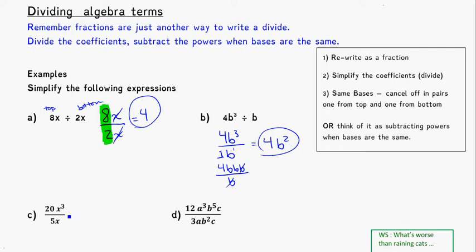Now these ones are already written as fractions, which is nice. So the first thing I'm going to do is pay attention to just the numbers in front, the coefficients. So I'll think to myself, what's 20 over 5? Or what's 20 divided by 5? That's going to be 4.